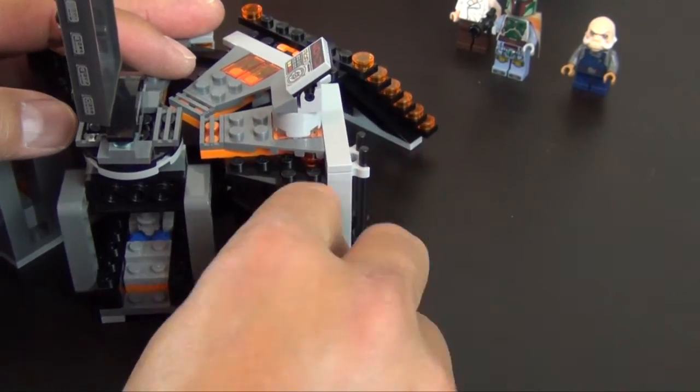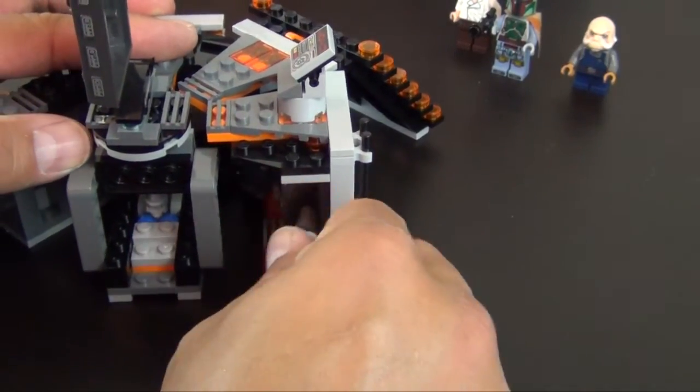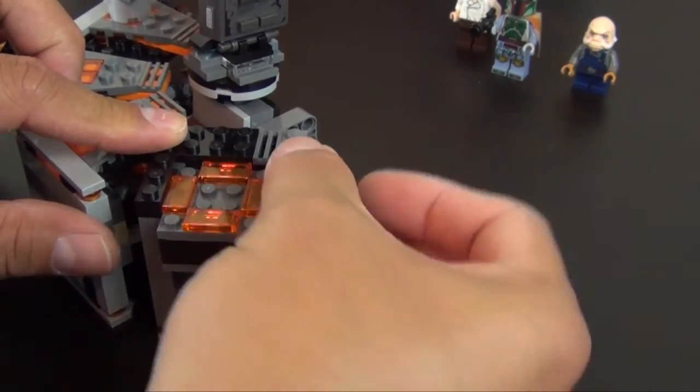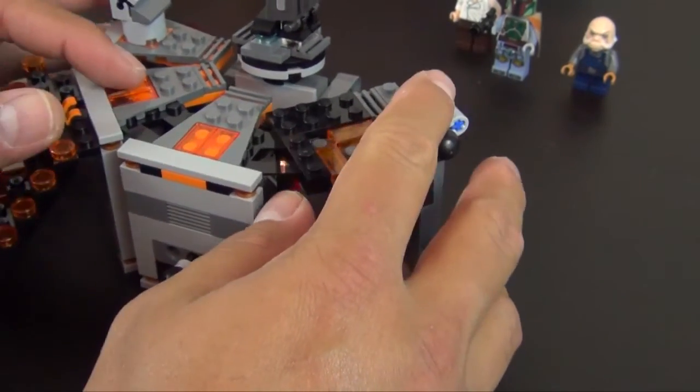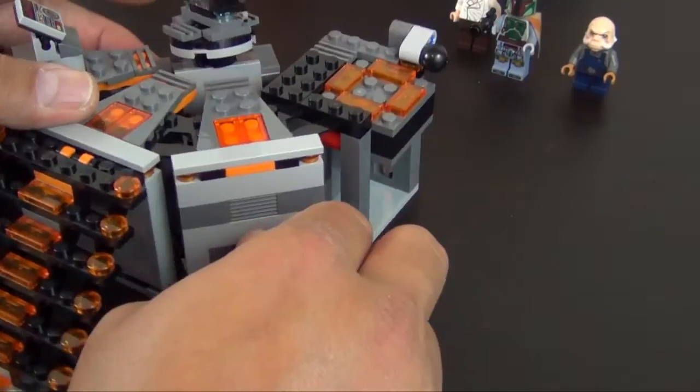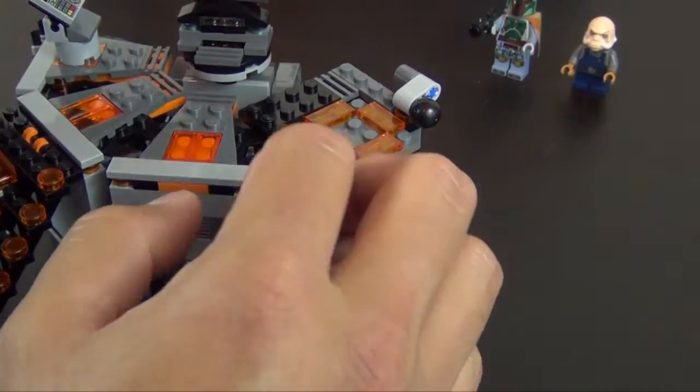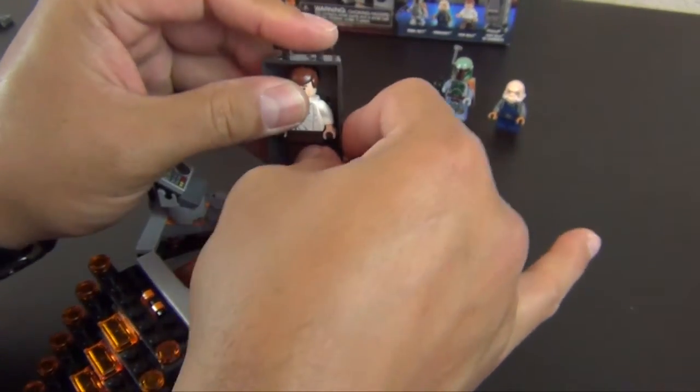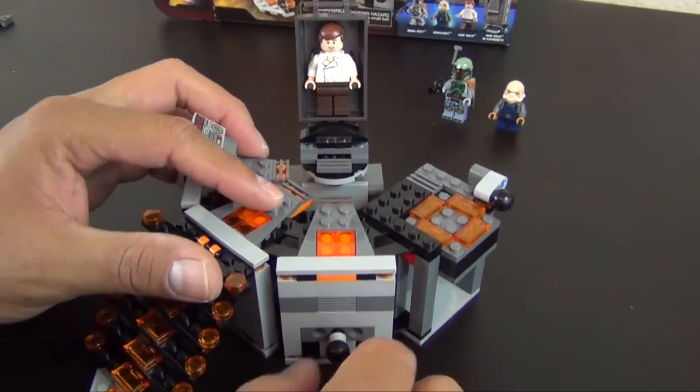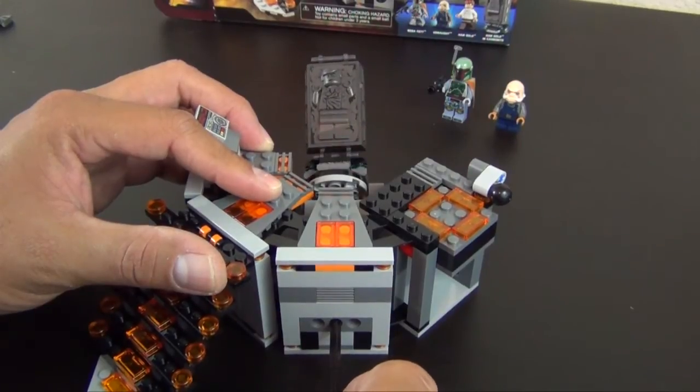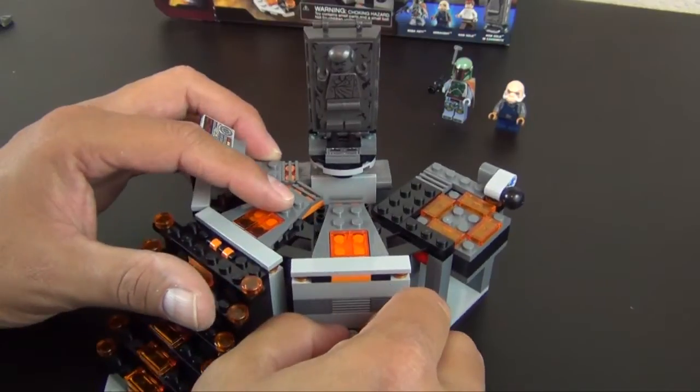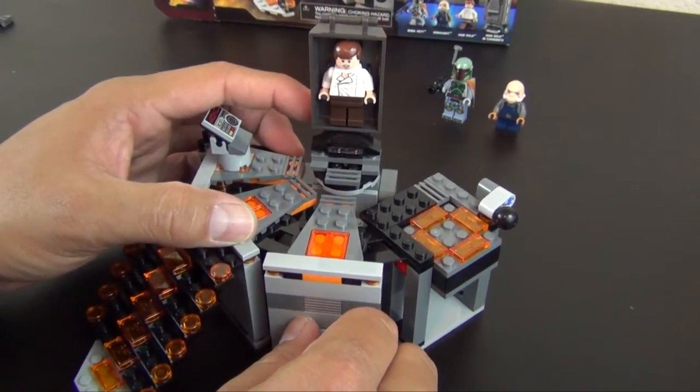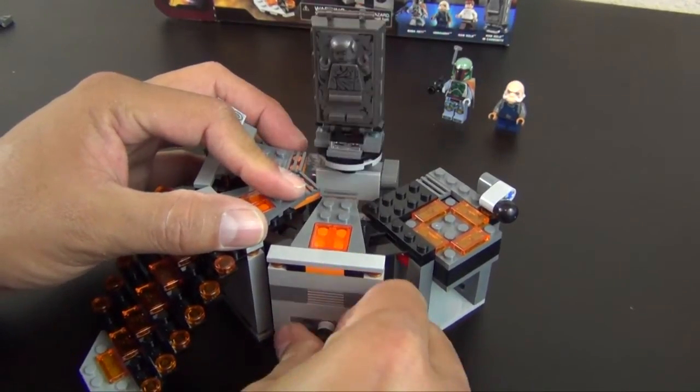They're showing looks like some of the play features in the instructions. They're showing this piece going up and down. They show the elevator, which I already kind of figured out. And then they show this piece. So the way they show it in the instructions is, let me zoom out a bit. They show Han Solo like this. And then you pull the piece out, rotate it around, and then push it back up. And it comes up frozen in the carbonite. Just like that.